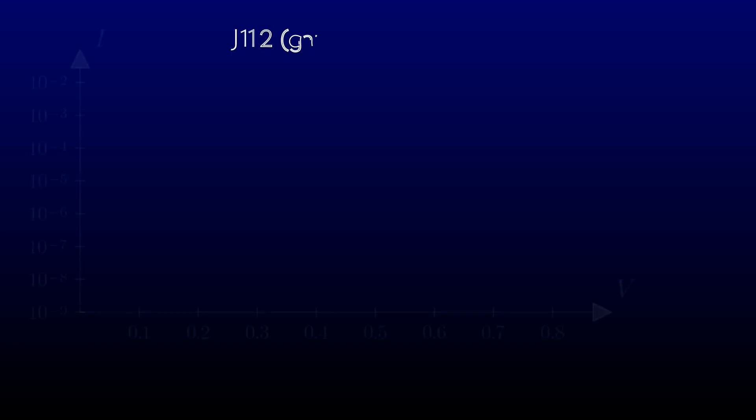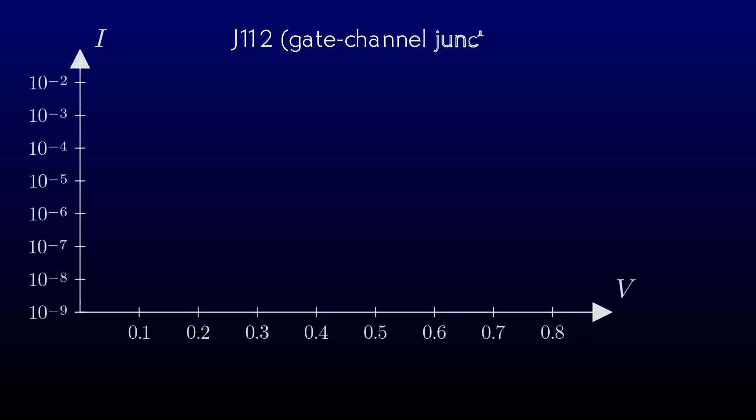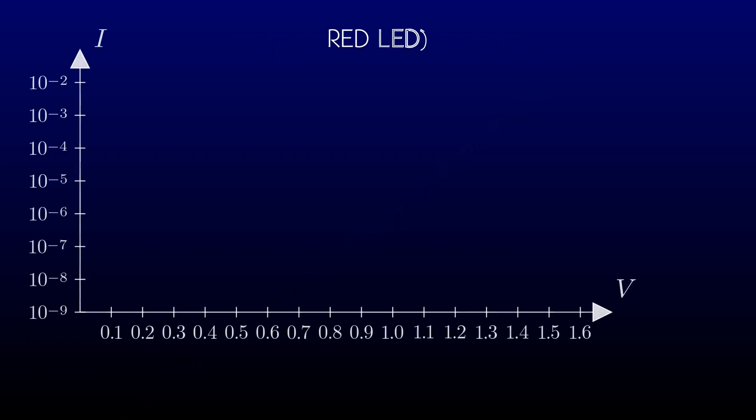How about the gate-to-channel junction of a J112 JFET? We'll tie the source and drain together and measure the current from the gate. The JFET junction also looks like a diode. What the heck? Let's put a red LED in there. The voltage scale comes out very different, because the gallium arsenide of the LED has a wider band gap than the silicon of the devices we've seen so far. But it's still a diode.